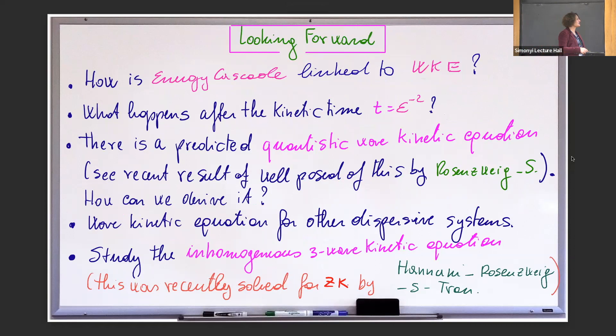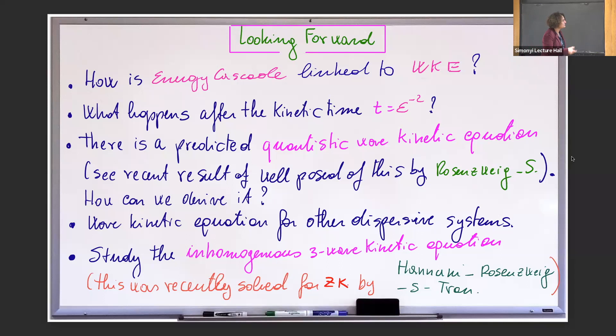I'm going to summarize what we are thinking about from this point on. One thing we are thinking about — we wish we had not used that equation — it was just a lot of complications. Now seriously though, what are we thinking? One thing to ponder about is the connection between what I talked about yesterday — the energy cascade, which is completely deterministic and for long times — compared to the wave kinetic equation, which is derived for the kinetic time. How are those two things related? Is there a relationship?